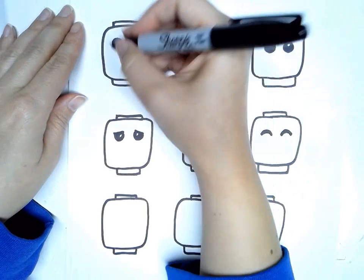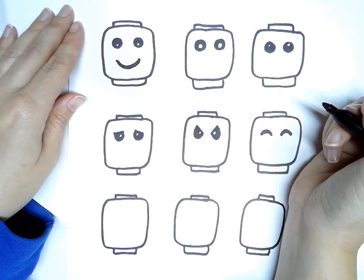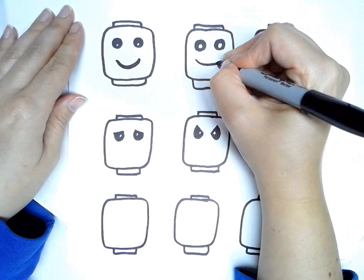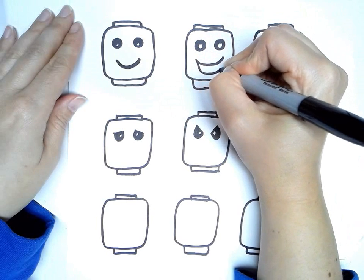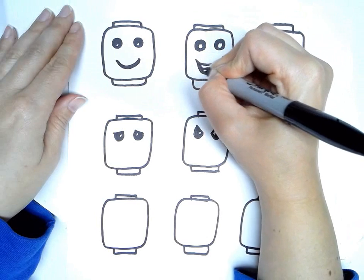So, for the mouth, you can just do, you know, a simple smiley face. Or you could show teeth. So you could have its mouth open with some teeth showing like that. And then fill in the black around it.